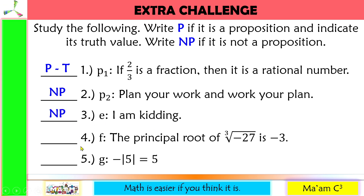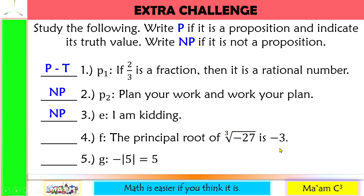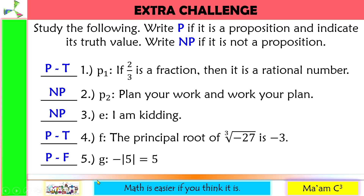Number four: 'The principal root of the cube root of −27 is −3.' This is a declarative sentence. The cube root of −27 has principal root −3, because with an odd index and a negative radicand the root is a negative number. So this is a proposition whose truth value is true. Number five: 'The negative of the absolute value of 5 is equal to 5.' The absolute value of 5 is 5, but there is a negative outside, so the result should be −5, not 5. This is a proposition, but the truth value is false.